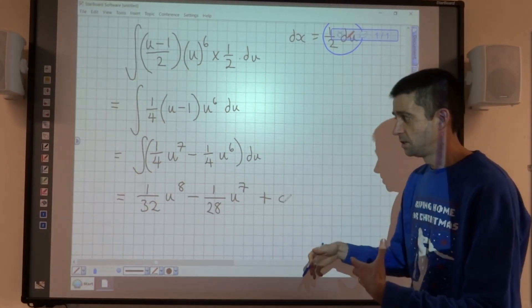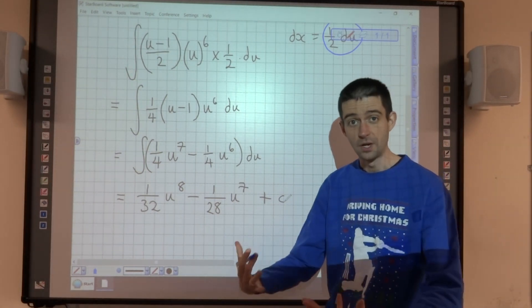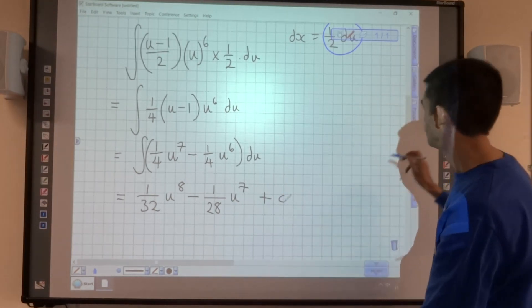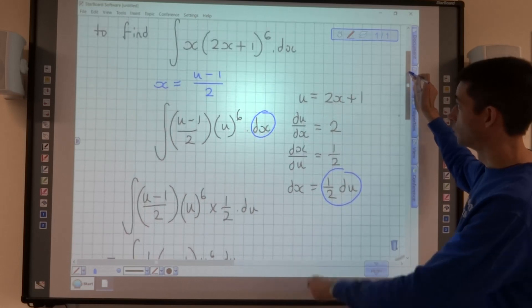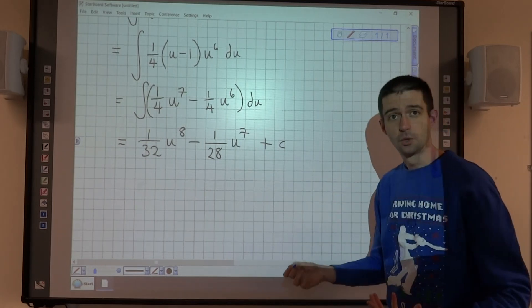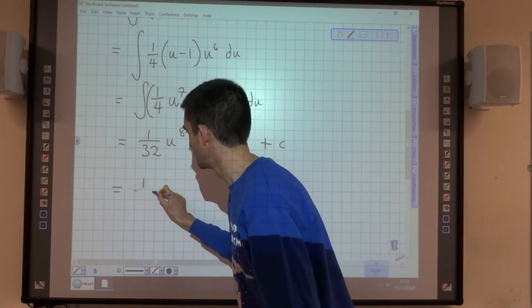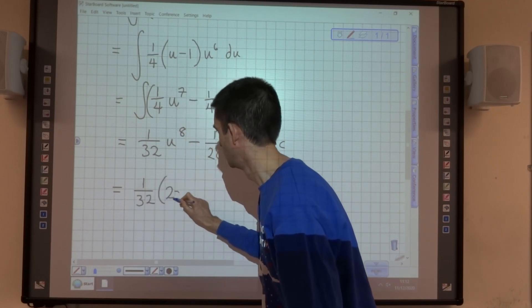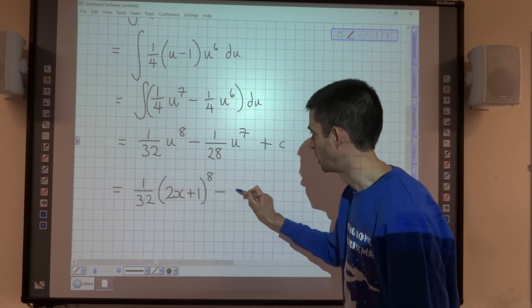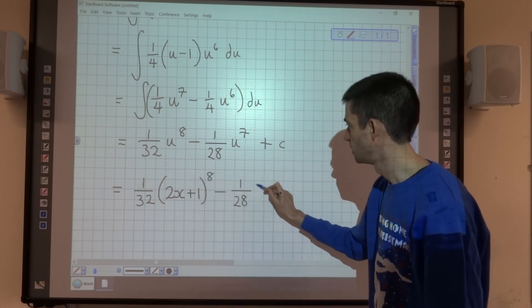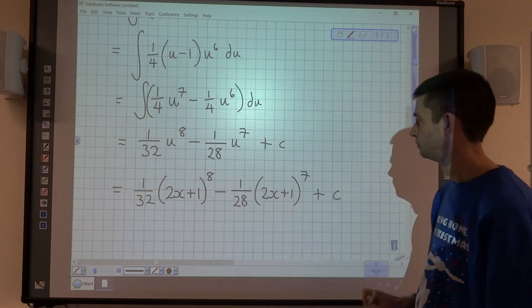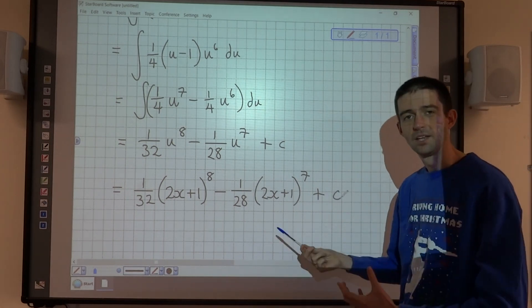Now, because this is not definite integration, we're just being asked to find an integral. What we would now need to do is to put it back in terms of the original variable, which was x. So we need to go back to our original substitution of u equals 2x plus 1 and replace u in this result with 2x plus 1. So the result of integrating is going to be 1/32 times (2x plus 1) to the power of 8, minus 1/28 times (2x plus 1) to the power of 7, plus C. And that is the result in terms of x.